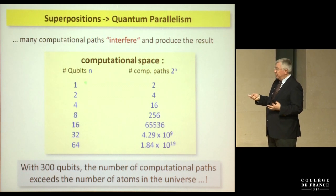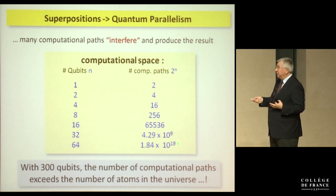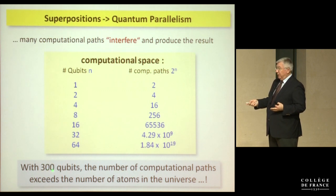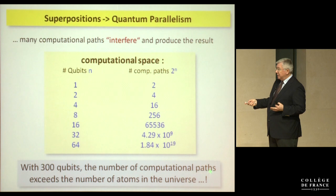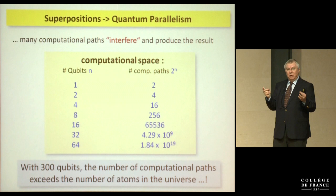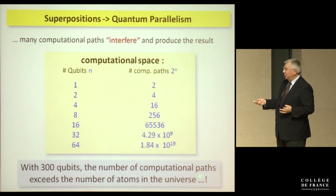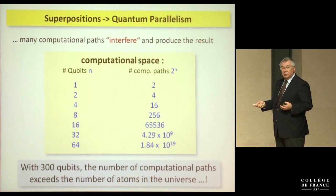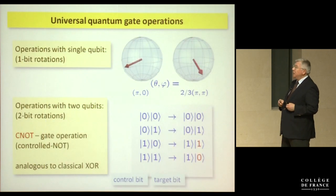For n qubits, the computational paths grow as 2^n — already for 64 qubits this is 10^19 paths. For 300 qubits, the number of computational paths exceeds the number of atoms in the universe. We only need 300 atoms to achieve this, but controlling that enormous Hilbert space is the challenge. This is what we have to do to make quantum computation work.